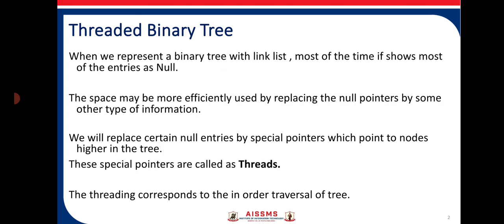If children have no left or right child, being leaf nodes, we maintain their left and right pointers as null. So when we represent a tree with a linked list, most values are null. Space can be used more efficiently by replacing null pointers with some other type of information — that is the key idea of a threaded binary tree. We replace certain null entries with special pointers that point to nodes higher in the tree, and these special pointers are called threads.